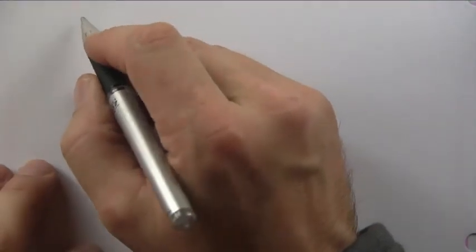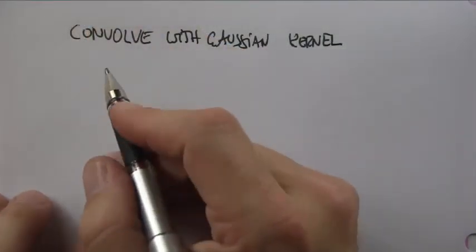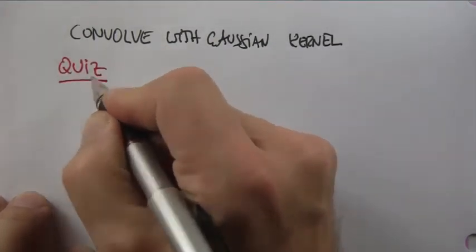So what happens if we convolve an image with a Gaussian kernel? Let me ask your intuition in the following quiz, and it's completely okay if we get this wrong.